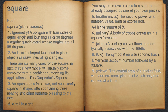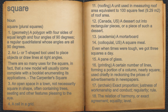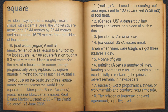9. Cricket, the central area of a cricket field, with one or more pitches of which only one is used at a time. For example, an ideal playing area is roughly circular in shape with a central area, the cricket square, measuring 27.44 meters by 27.44 meters and boundaries 45.75 meters from the sides of the square.